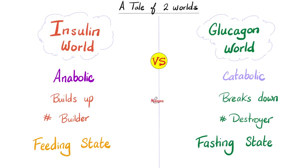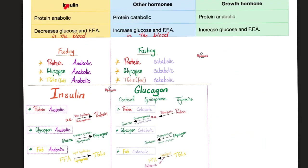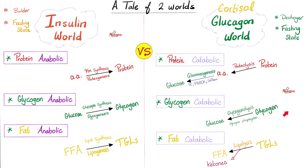Does cortisol belong to the insulin side or the glucagon side? It's in the glucagon camp. Insulin alone opposes all the others — all other hormones, including glucagon, cortisol, epinephrine, and thyroxine, are on the glucagon side. Cortisol is catabolic: it breaks down glycogen into glucose, proteins into amino acids, and triglycerides into free fatty acids. You break things down because you need energy — because it's a stressful day and you're driving like a maniac.